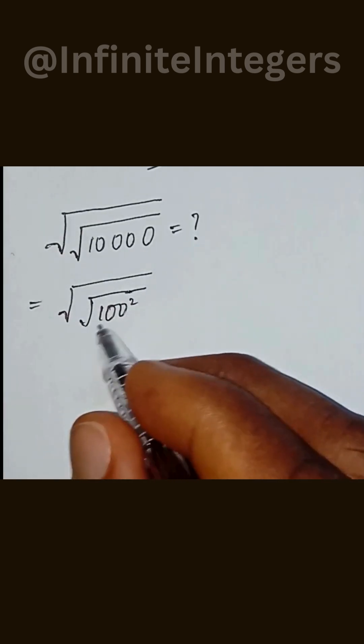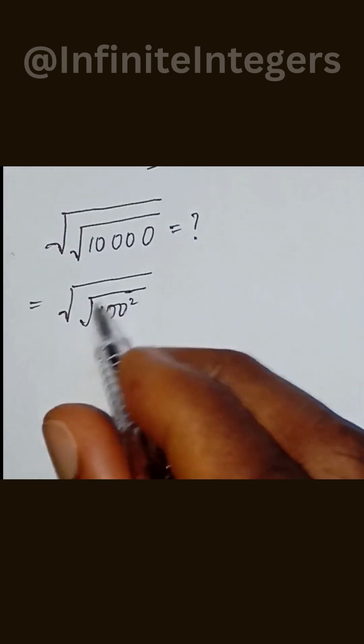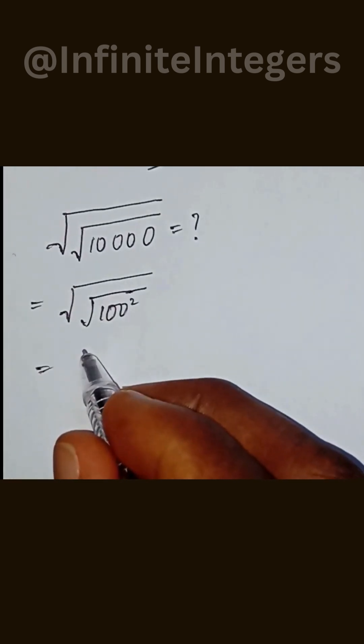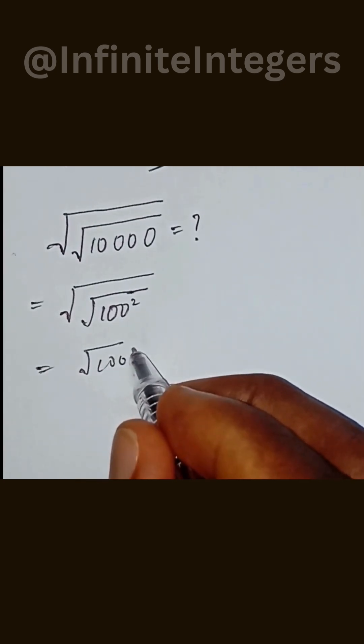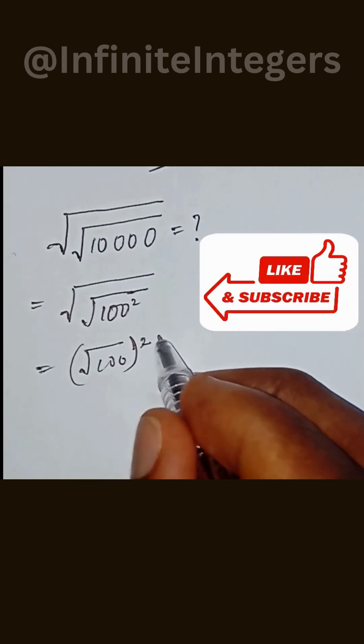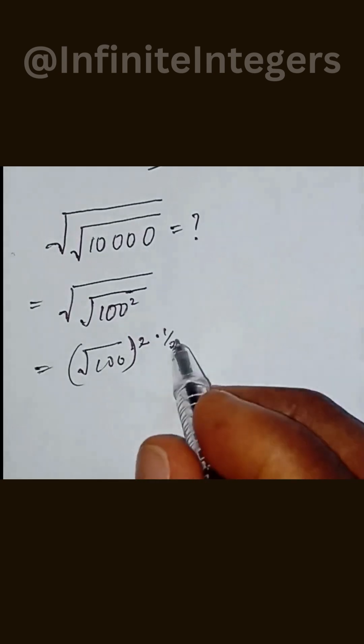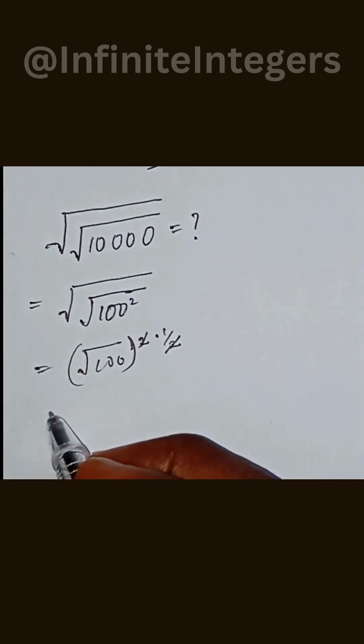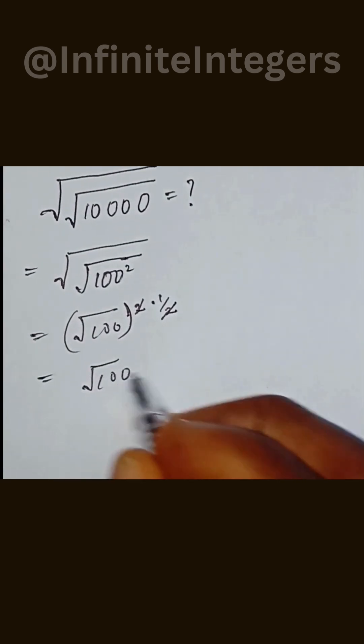Then what we can do is to have square root of 100 to the power of 2, then multiply by half, power half. So if this counts well with this, we are left with square root of 100, square root of 100.